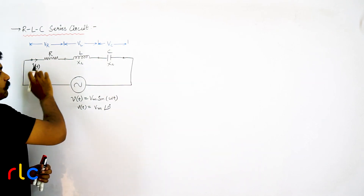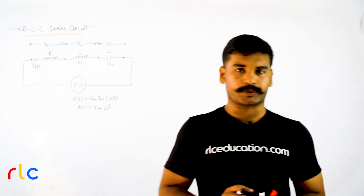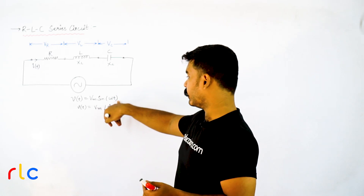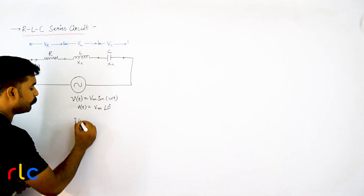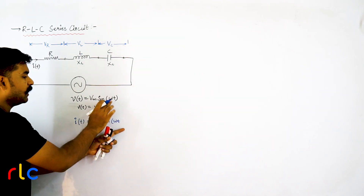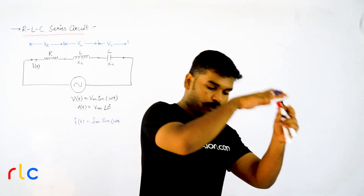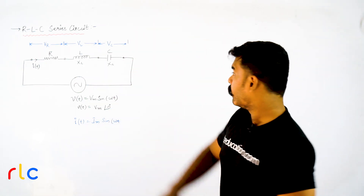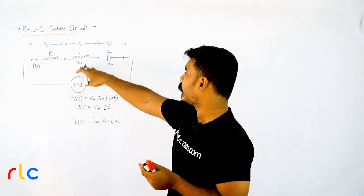Now we have the current flowing through resistor, inductor, and capacitor. If current flows only through a resistor, the phase angle between voltage and current is 0. But now we have both inductor and capacitor. Due to the inductor, the current will lag the voltage; due to the capacitor, the current will lead the voltage. So the net lagging or leading of the current depends upon the values of the inductor and capacitor reactances.